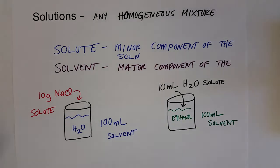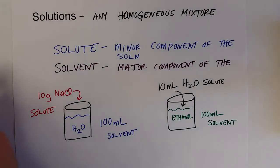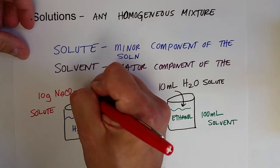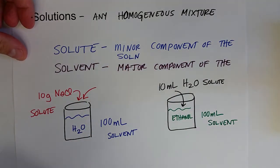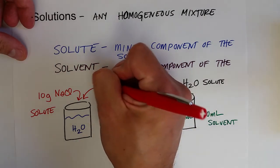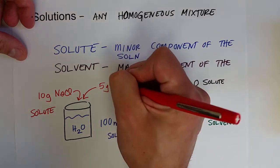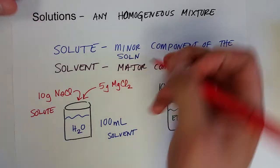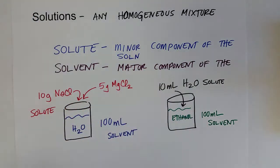There can be more than one solute, but typically only one solvent. To this same solution over here that already has ten grams of sodium chloride, I could add five grams of magnesium chloride. And so now, sodium chloride and magnesium chloride are all solutes.